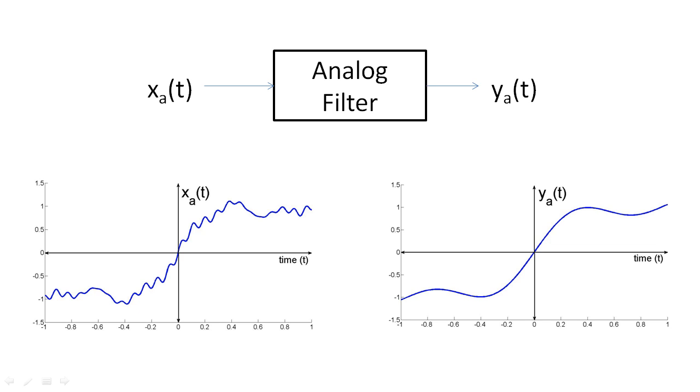In Analog Signal Processing, you learn that a system consists of an input, filter, and output. We use the subscript A to denote that the signals X and Y are analog signals. In this example, we show how a low-pass filter removes the high-frequency components, or the squiggles, from X sub A of T to produce a low-frequency signal, Y sub A of T.